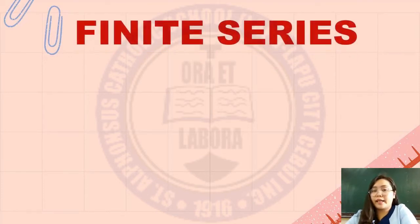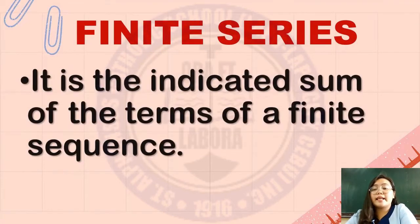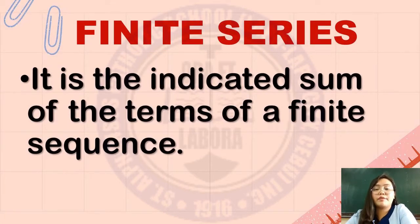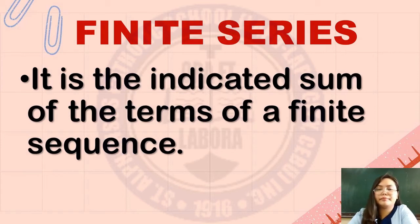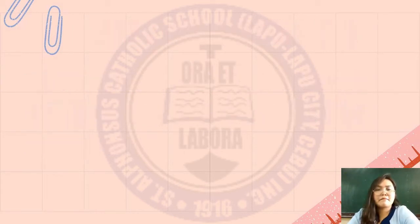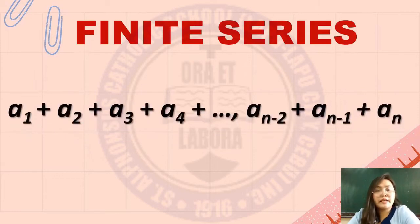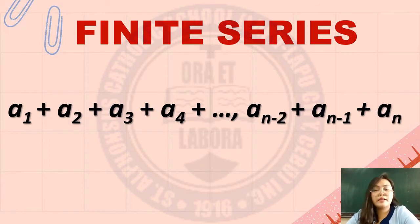The second type of series is finite series. It is the indicated sum of the terms of a finite sequence. As with the finite sequence, the number of terms is defined, thus producing a finite series or partial sum, which is denoted by S sub n. Finite series is a sub 1 plus a sub 2 plus a sub 3 plus a sub 4 plus and so on, a sub n minus 2 plus a sub n minus 1 plus a sub n.